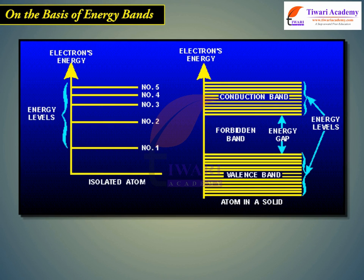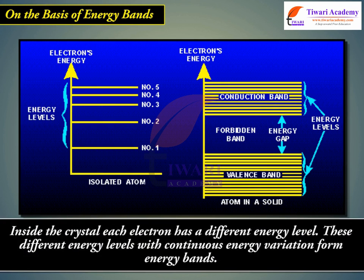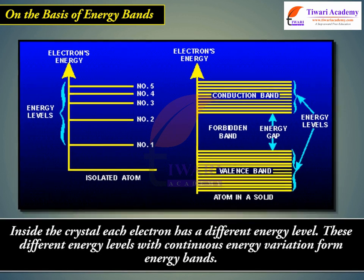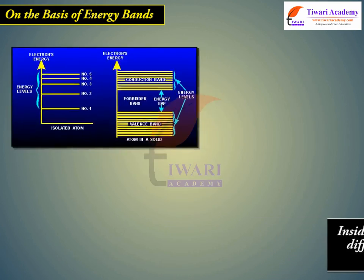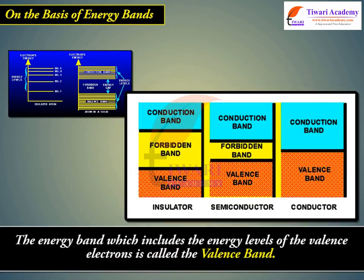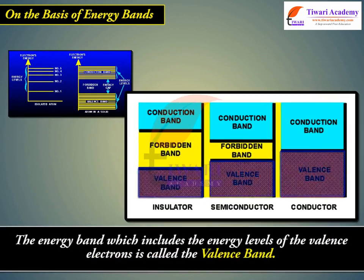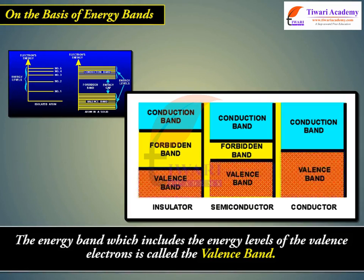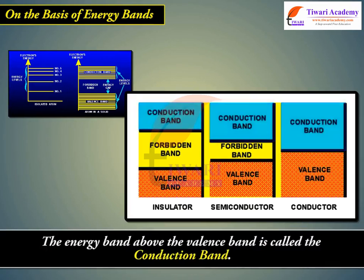On the basis of energy bands: inside the crystal, each electron has a different energy level. These different energy levels with continuous energy variation form energy bands. The energy band which includes the energy levels of the valence electrons is called the valence band. The energy band above the valence band is called the conduction band.